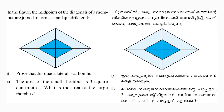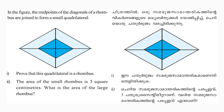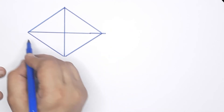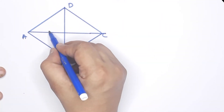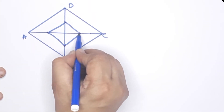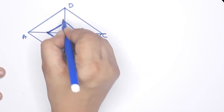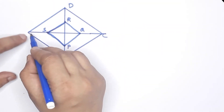Next question: In the figure, the midpoints of the diagonals of a rhombus are joined to form a small quadrilateral. Prove that this quadrilateral is a rhombus. The area of the small rhombus is 3 square centimeters. What is the area of the large rhombus? Let the large rhombus be ABCD, and label the midpoints P, Q, R, S. We need to prove PQRS is a rhombus.